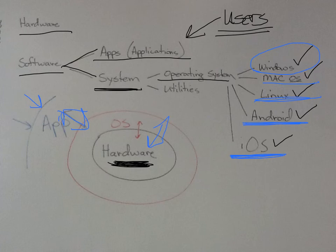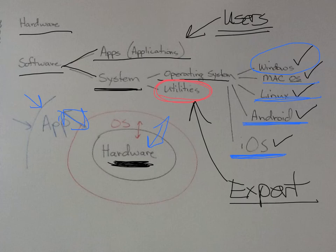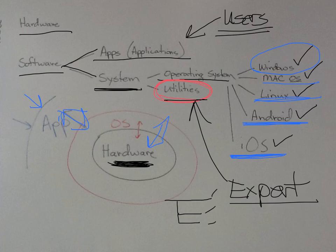One other thing I have here — utilities. Utilities allow us to be a little more of an expert. Some examples would be file management: a hierarchy where you have a file folder with folders underneath, and you organize your files based on that hierarchy. A utility would be, for example, a file manager, being able to defrag your hard drive, check your memory, check what programs are open using a task manager, change passwords on your computer, or manage your virus software. Those are all utilities. Being able to use a utility makes you a little more of an expert. That's it for week one.